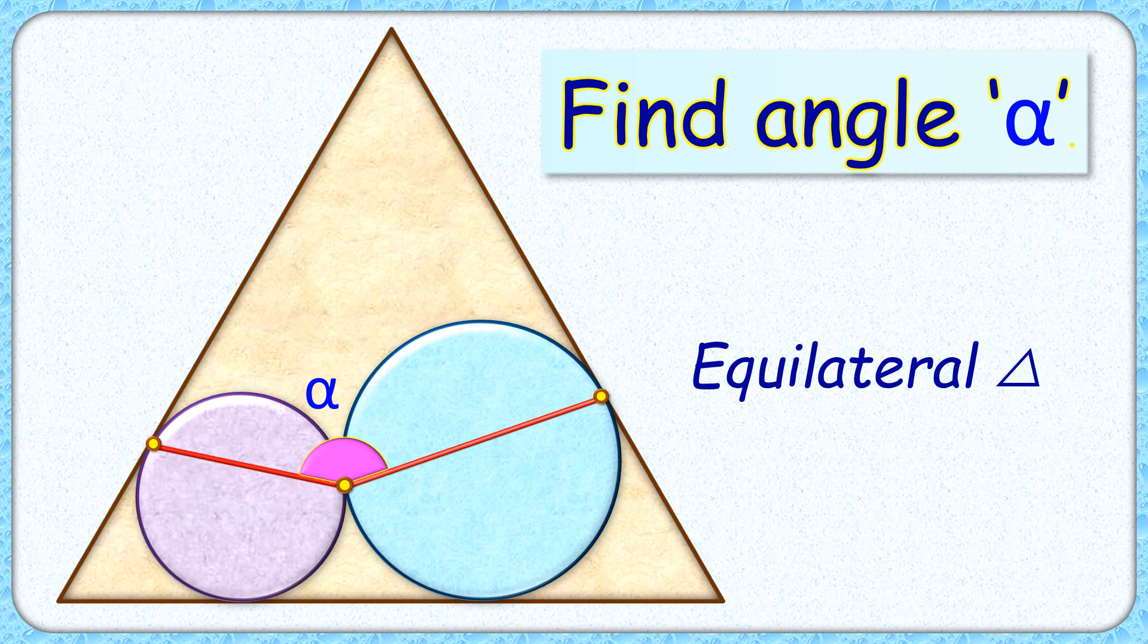Welcome everyone to this interesting question where given to us is an equilateral triangle and two circles touching the sides of the equilateral triangle. These line segments are joining the points of contact. The exciting part is with this limited data we have to find this angle formed between the line segments, or the value of angle alpha.